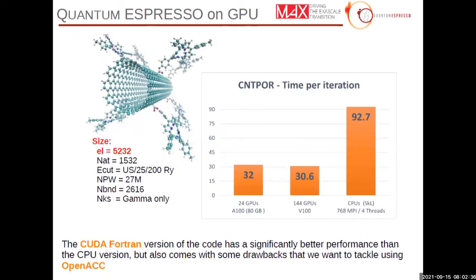Let me present the performance. These results refer to the CUDA Fortran version of the code. For a quite large molecule of 5000 electrons, the Kohn-Sham equations are solved iteratively. One iteration took about 90 seconds with thousands of CPU cores, whereas it took 30 seconds using GPUs — in particular 144 Volta with 100 GPUs or 24 Ampere GPUs. We are quite happy and the performance is satisfactory.